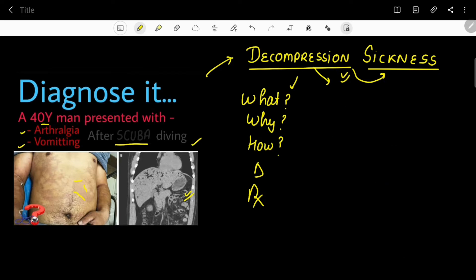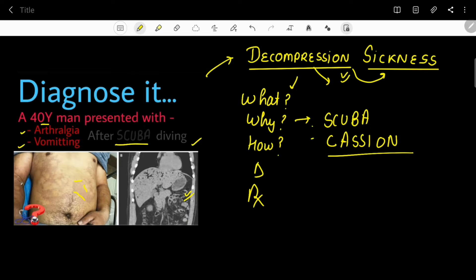This disease is more common in certain professions. One group is scuba divers; another is caisson workers. A caisson is an engineering term for a tunnel or well-like structure that is dug, where air pressure is used to prevent water from entering, creating high pressure inside. Workers in these caissons are at high risk. It can also occur in aircraft or sometimes in spaceships.